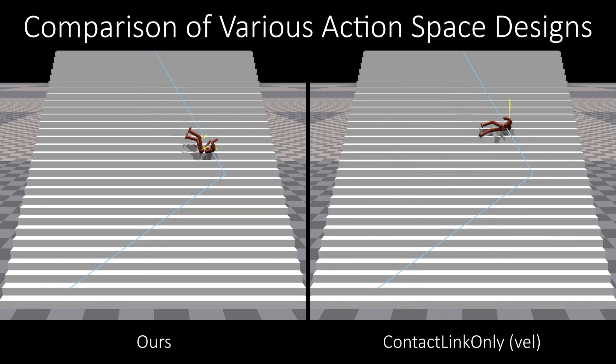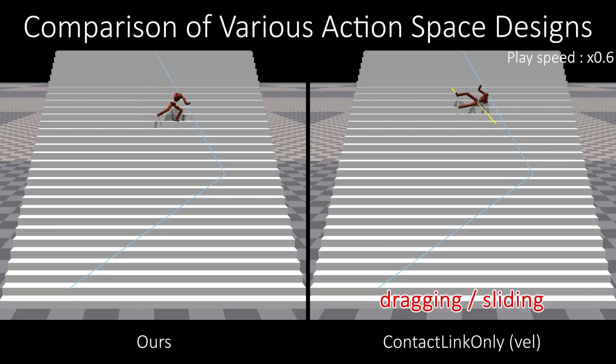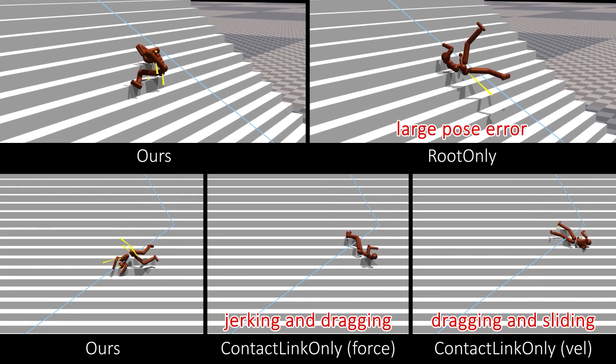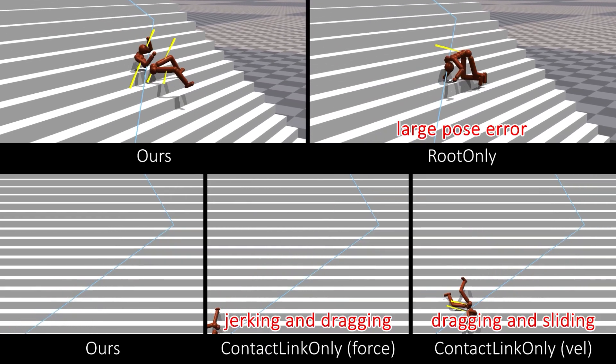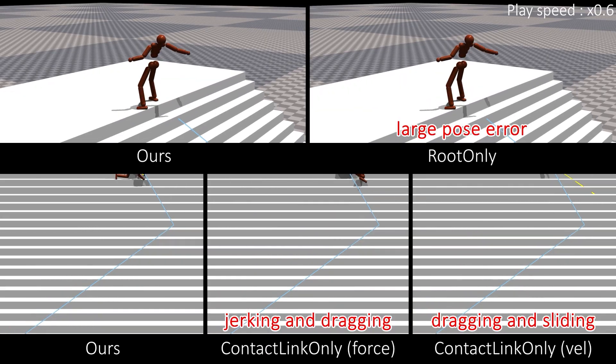Contact-link-only VEL perturbs link velocities similarly to the Many Worlds browsing approach. This leads to frequent dragging and sliding, reducing realism. These evaluations demonstrate that our action space achieves the highest motion quality across multiple aspects.